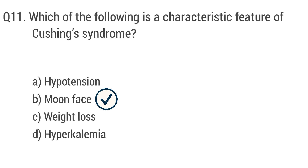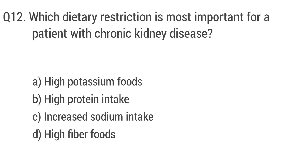Question number twelve. Which dietary restriction is most important for a patient with chronic kidney disease? The right answer is option A: high potassium foods.